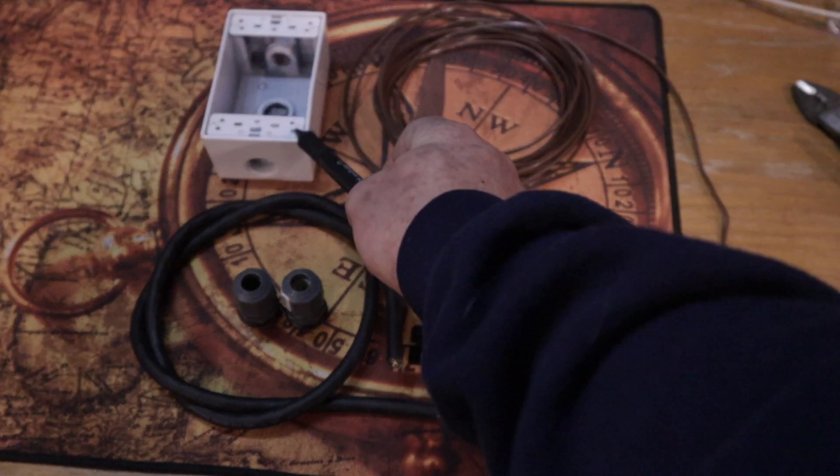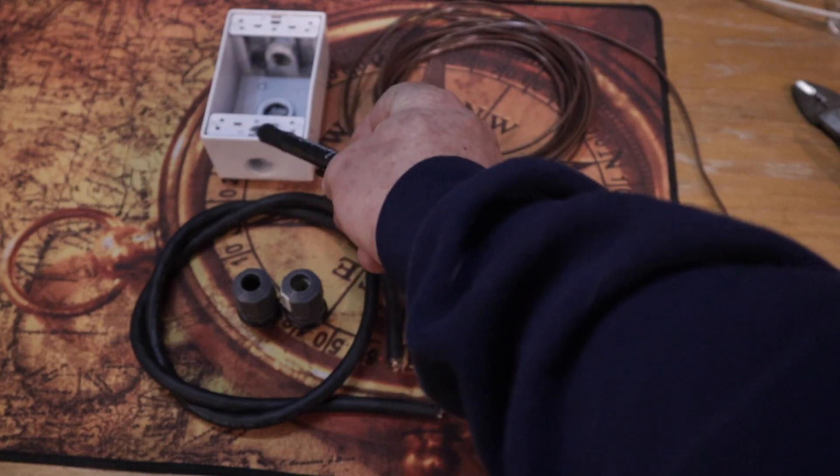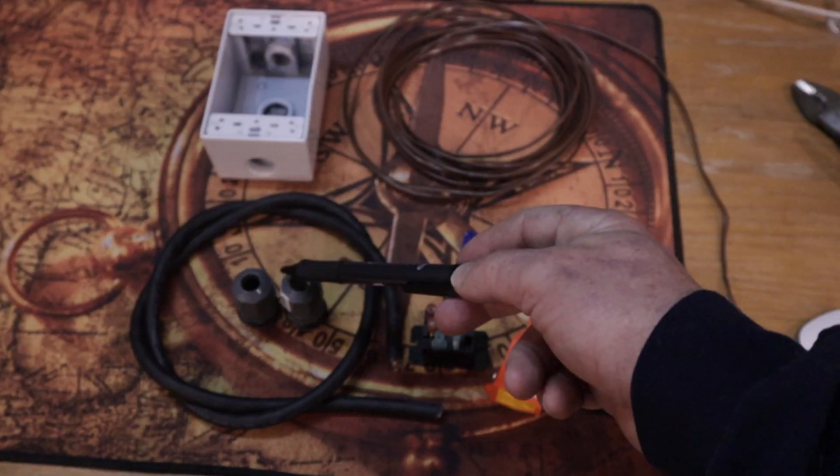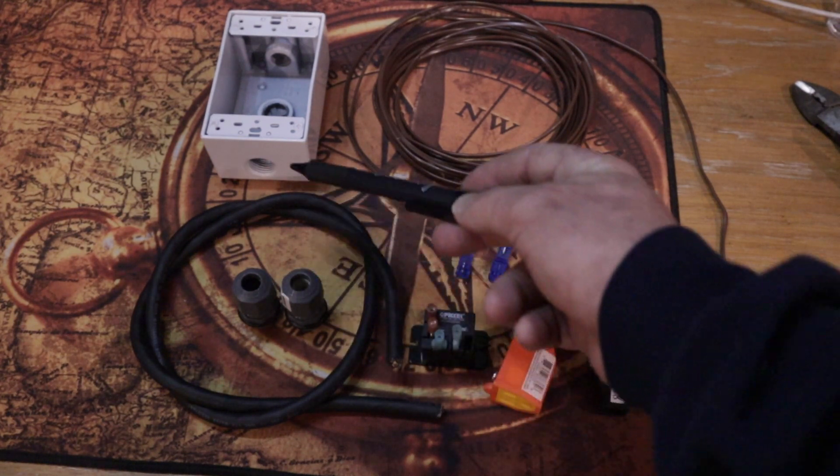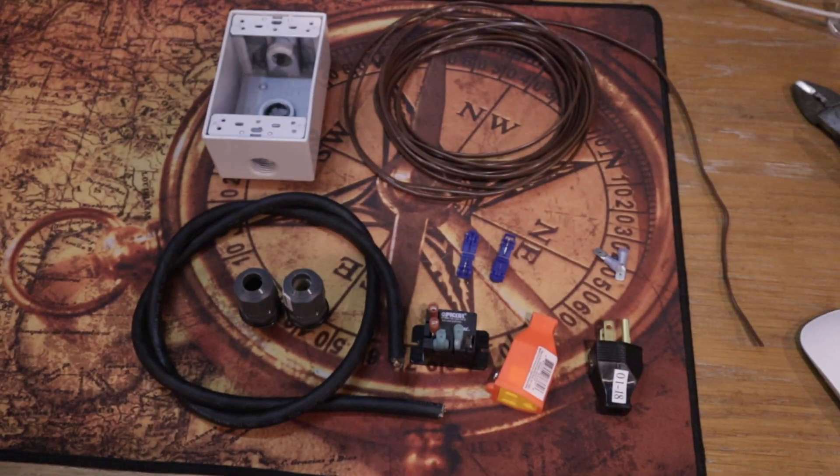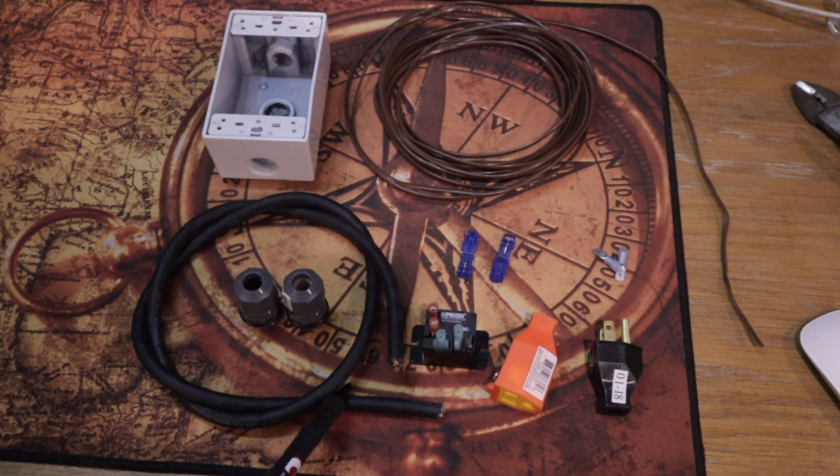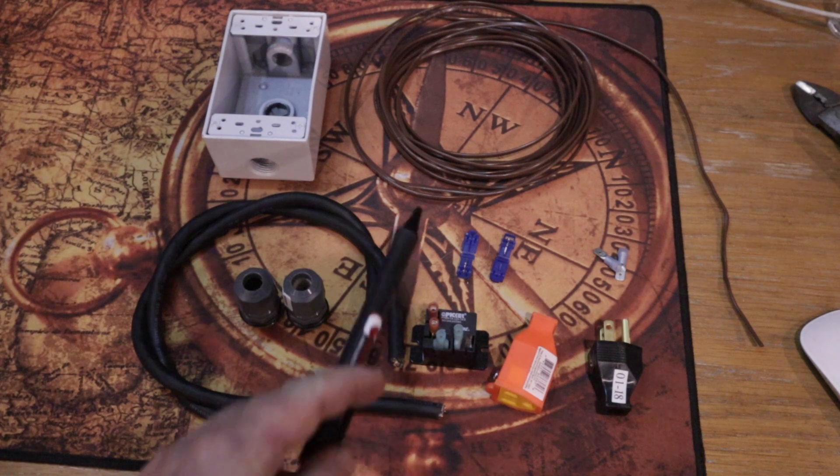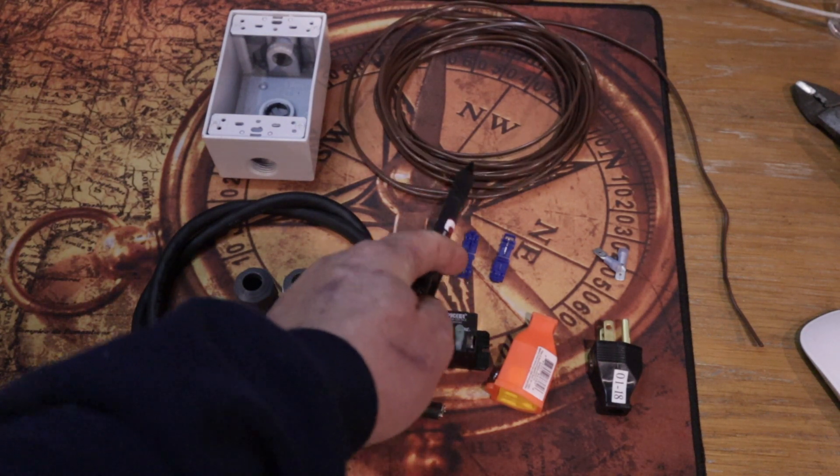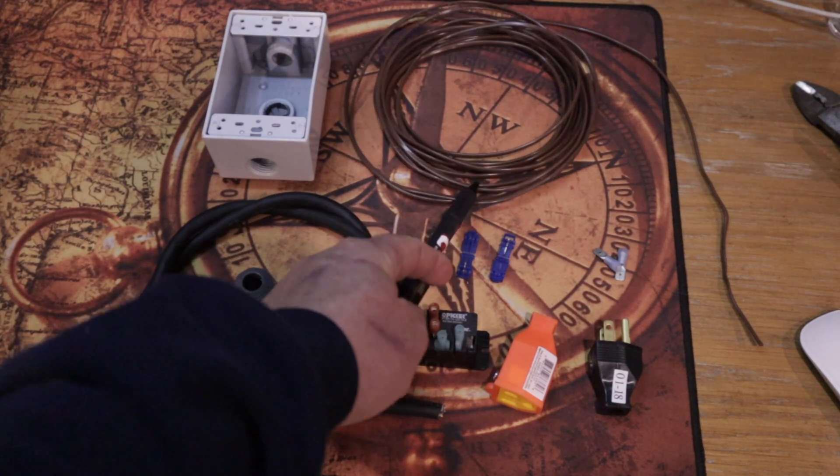You're going to need a single gang outlet box with a water resistant enclosure lid to it, along with two waterproof connections that will screw into the ends of the power box. The wire is going to be 3 conductor 14 gauge wire similar to an extension cord. For our control circuit wire, we're going to use double strand solid core thermostat wire.